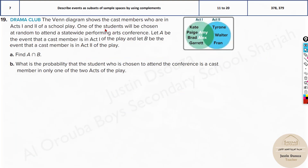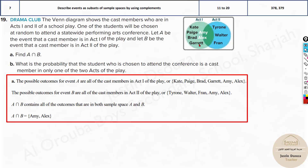A Venn diagram shows cast members who are in Acts 1 and 2 of a school play. One student will be chosen at random to attend a statewide performing arts conference. Let A be the event that a cast member is in Act 1, and let B be the event that the cast member is in Act 2. You can see Act 1 members, Act 2 members, and two overlapping members — Amy and Alex — who are in both. Find A intersection B: that's Amy and Alex.